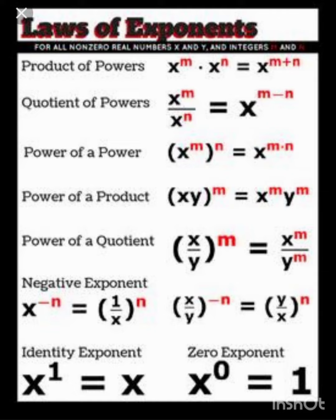Negative exponent. Any base to a negative power, the power becomes positive by reciprocating the base from numerator to denominator. A fraction with a negative power, the power becomes positive if you reciprocate the base.